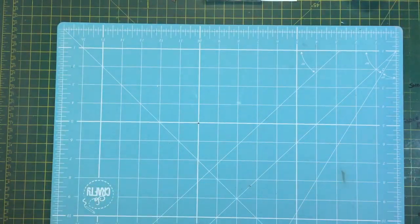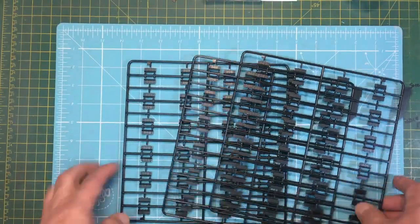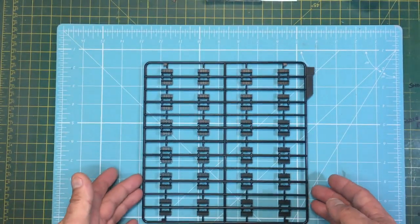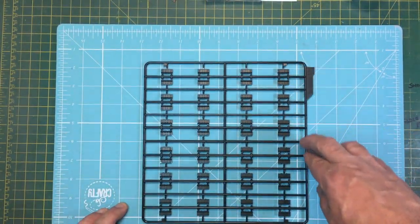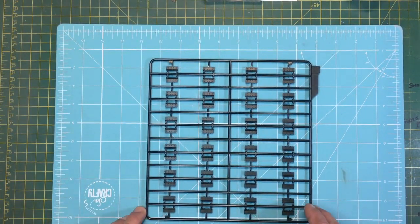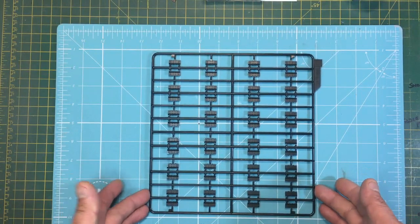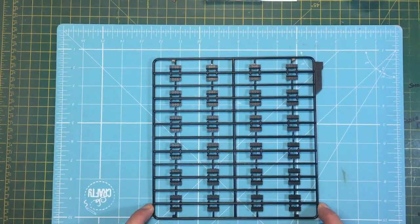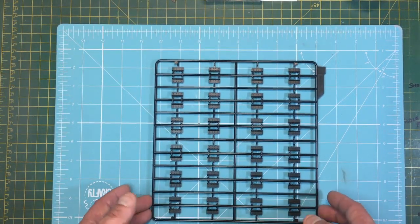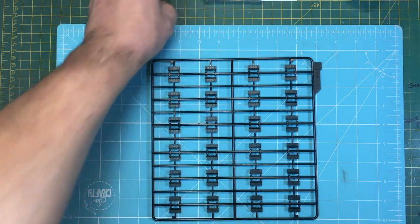Then we've got the tracks. You know how I love tracks. We've got three of those sprews, so we've got 48 links per sprue, three sprues, so that's 144 track pieces. Slightly less than the Mark IV with 184 track links.